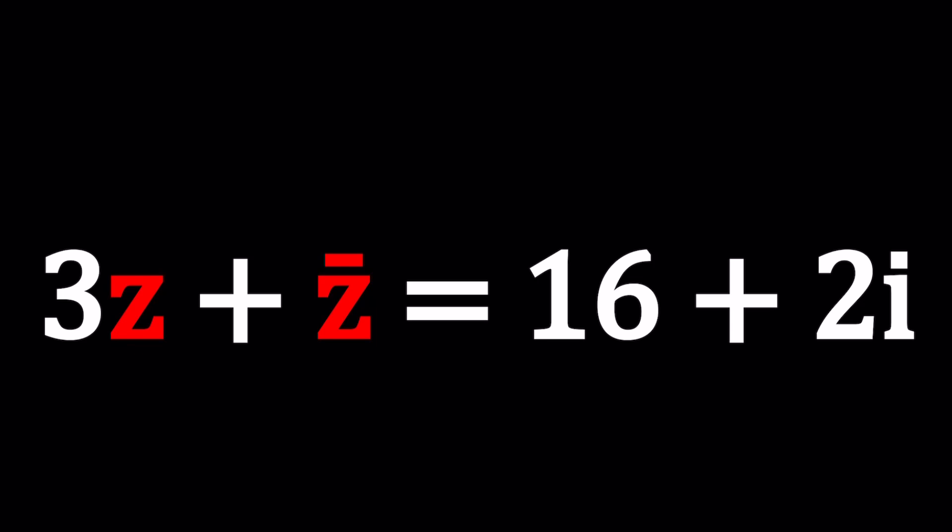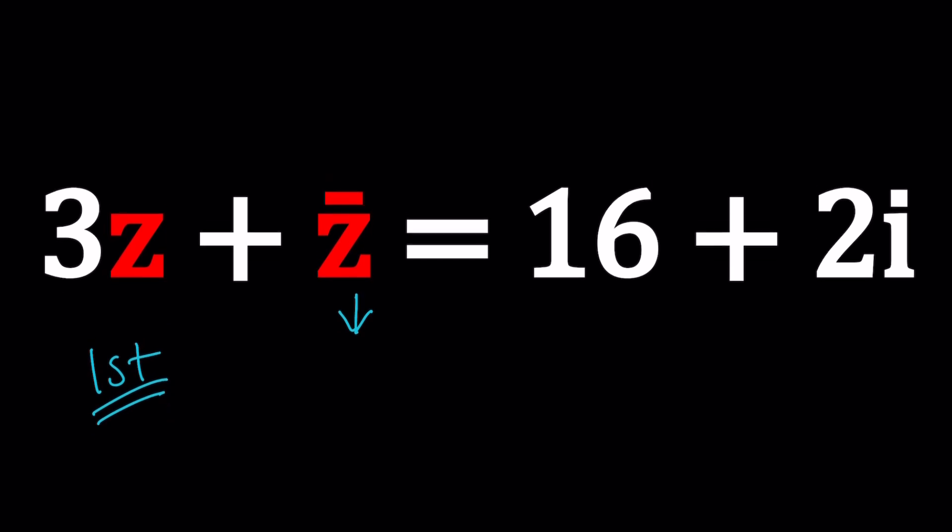So we have 3z plus z bar equals 16 plus 2i. Z bar basically represents the complex conjugate of z where it's defined as the unique number when multiplied by z and added to z it gives you a real number. In other words, we're going to talk about it in a little bit but let's go ahead and do this in two ways and first I want to talk about the first method.